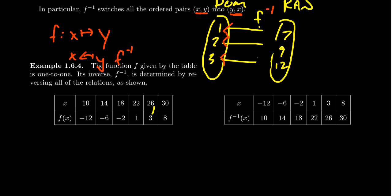Because f assigns to 26 the number 3, f inverse will assign to 3 the number 26. It reverses the order of all of the assignments. So if f of 30 is equal to 8, this means that f inverse of 8 is going to equal 30. We reverse the process. Instead of sending 30 to 8, we'll send 8 to 30. We just send it back to where it came from.